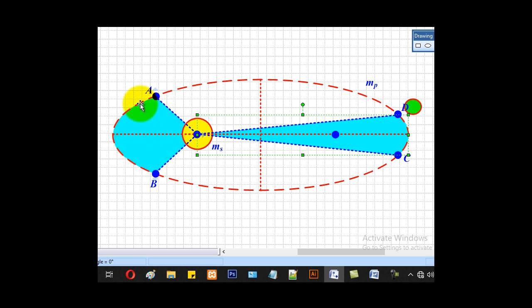You can see that the distance moved when the planet is closer to the sun is greater than the one moved when the planet is far from the sun. That is Kepler's second law. Let's go to the third law.